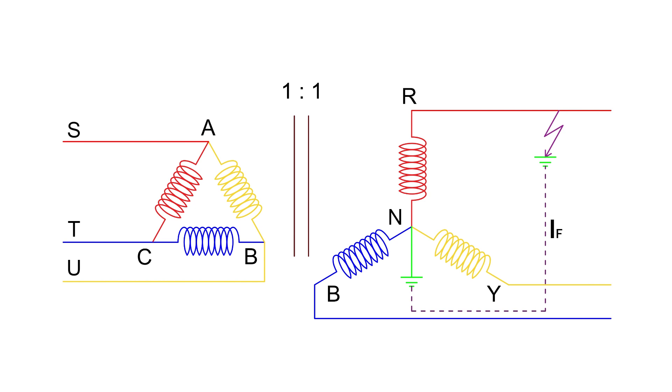As we know, a ground fault causes fault current to flow through the R phase, which consists of zero-sequence I0, positive-sequence I1, and negative-sequence I2 current components.